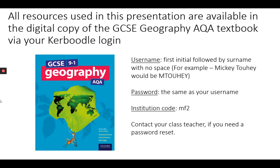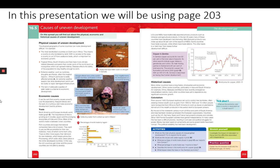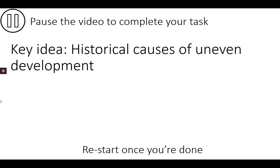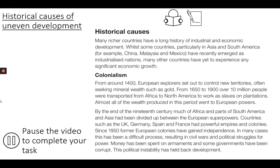Don't forget you can access the digital textbook as you watch the video — the access details are shown on the screen. In this video we're going to be making use of page 203. Press pause while you add the key idea: historical causes of uneven development.